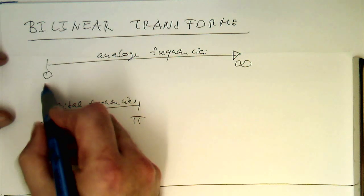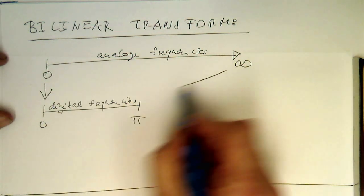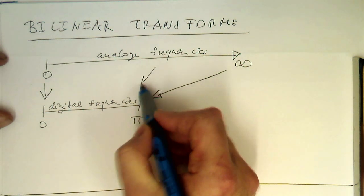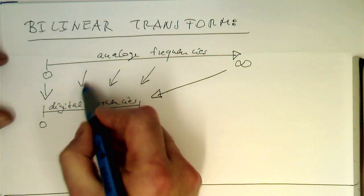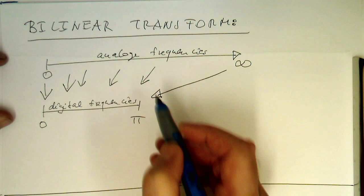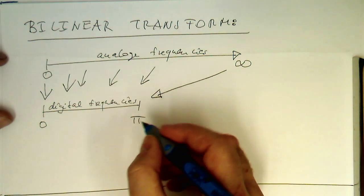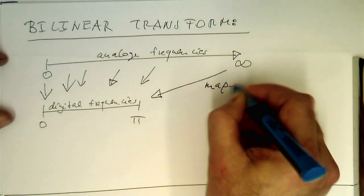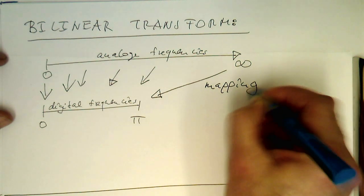So what we would like to have is a mapping which is mapping infinity to pi, and then all the intermediate values nicely distributed into this region here. So we'd like to have a mapping in this way.